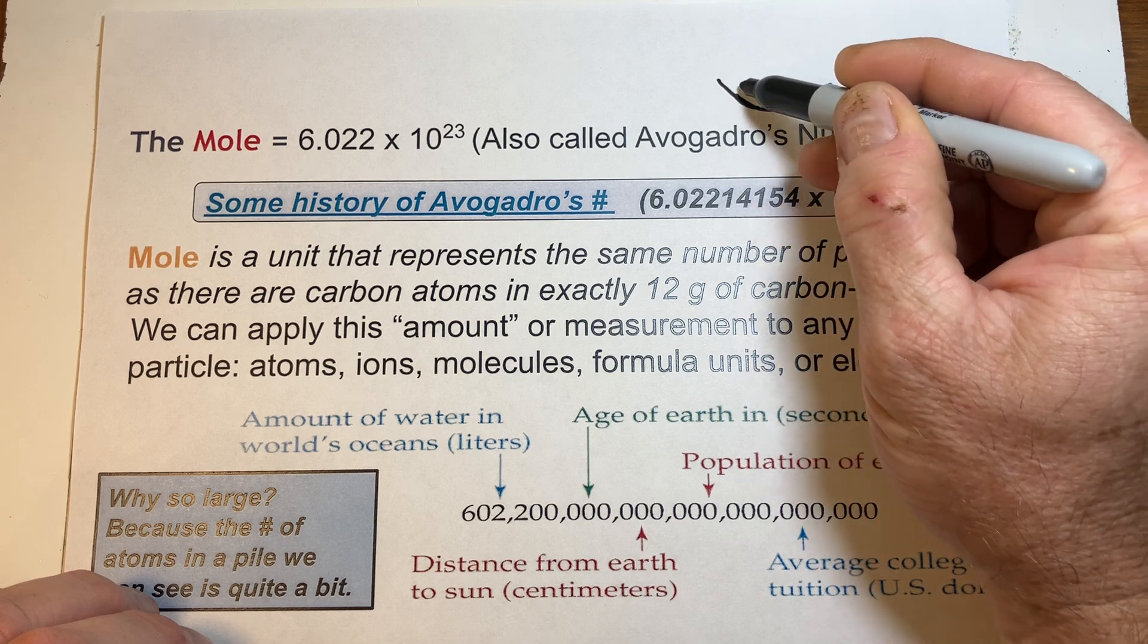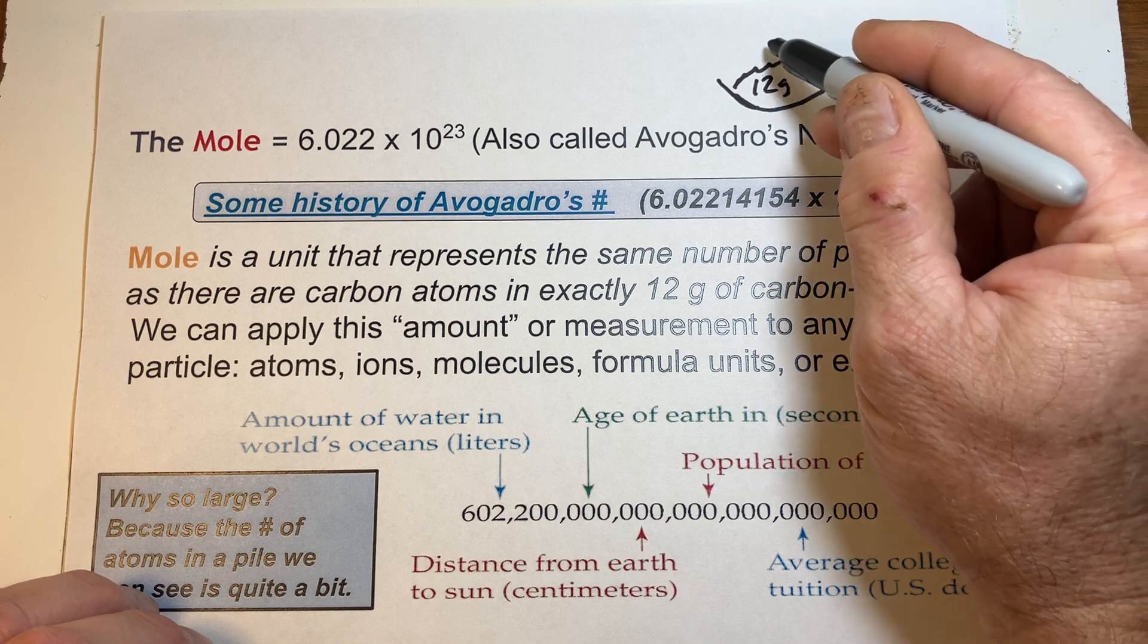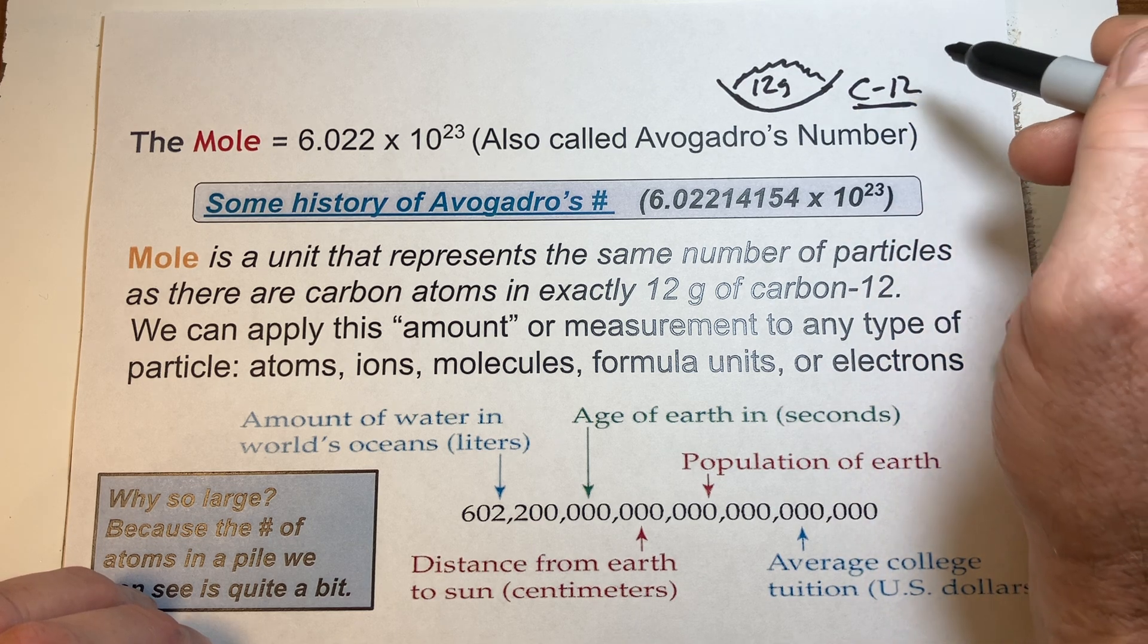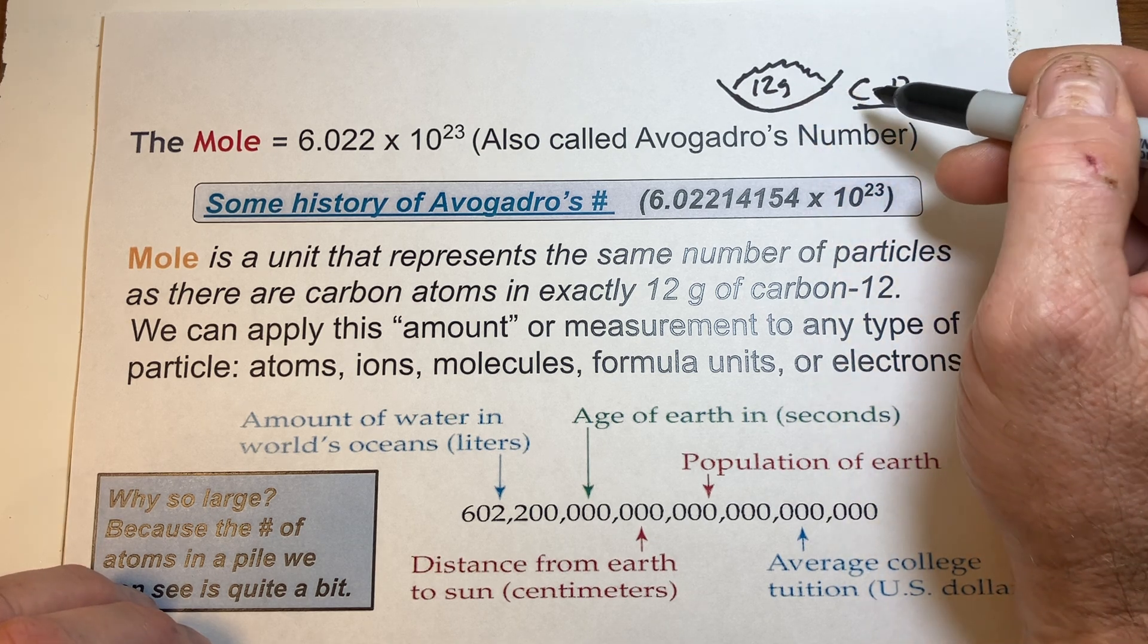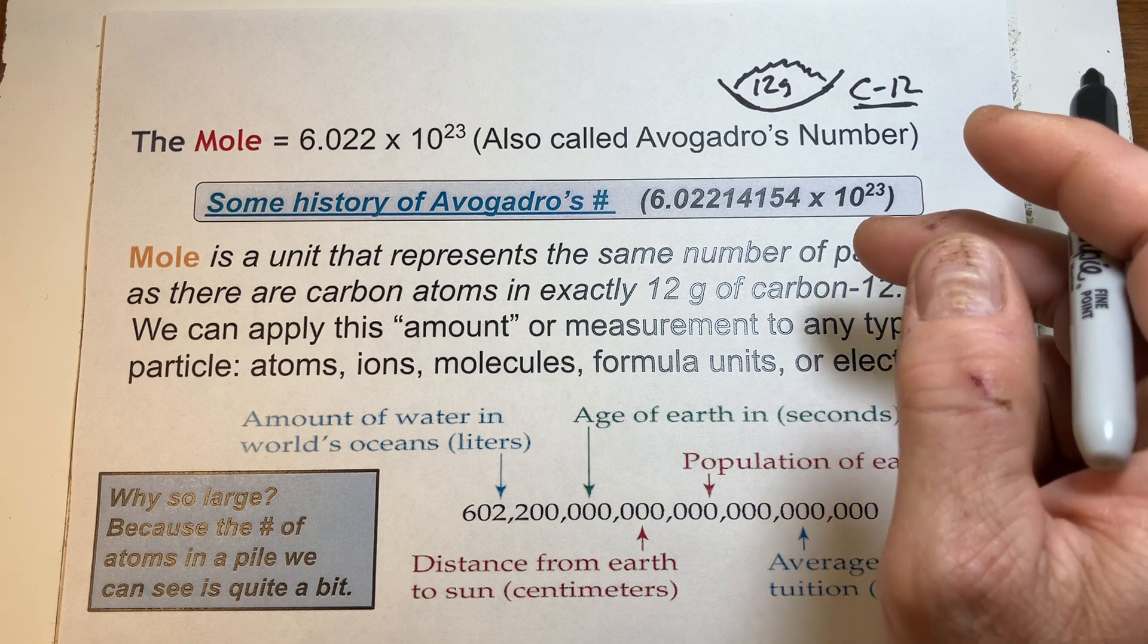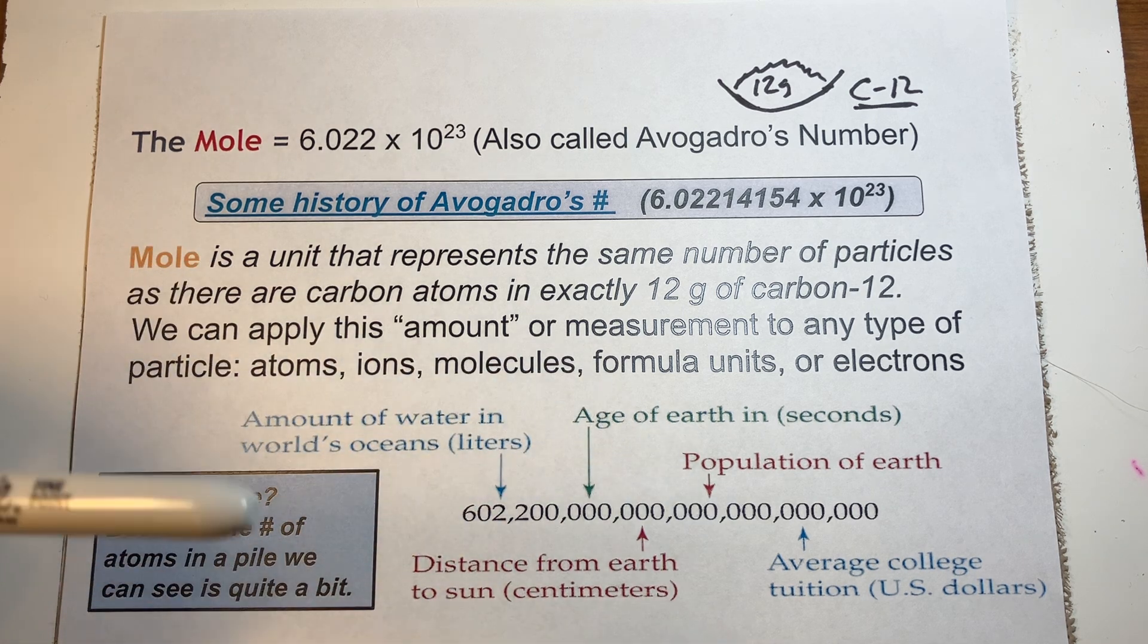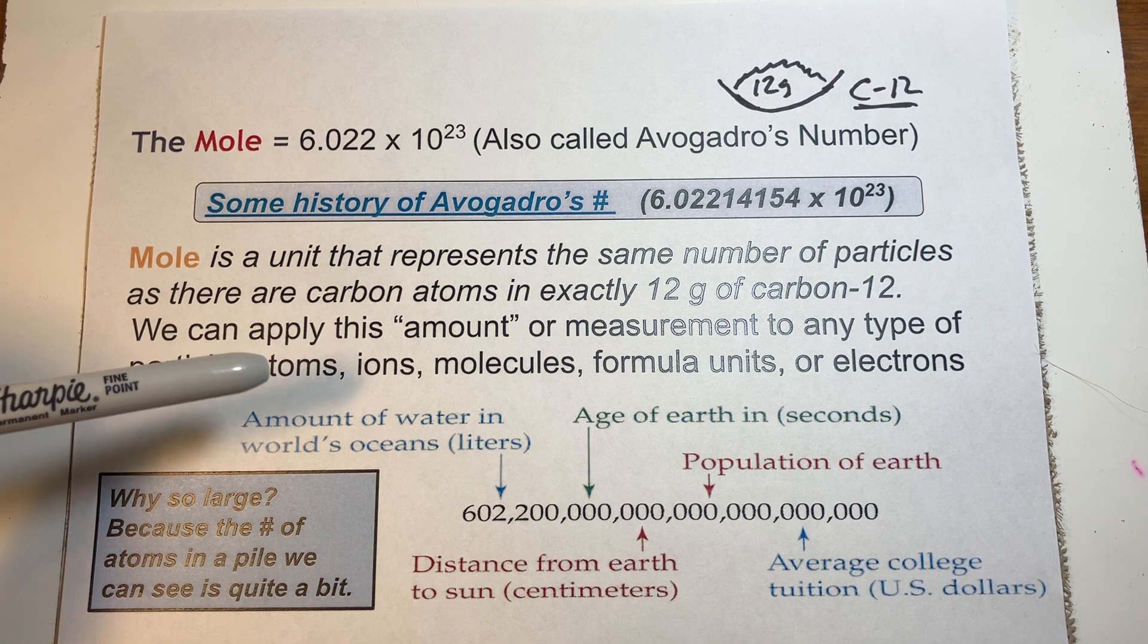So, maybe you can think of it maybe as, if I were to take and weigh out on a balance, twelve grams of just pure carbon twelve. That's a certain isotope, and you now know what this term means. It means it has six protons and six neutrons. All of those atoms in here that make up the twelve grams that are carbon, are carbon twelve. If that's the case, then that number is Avogadro's number. It's sort of what defines it. We can apply this amount or measurement to any type of particle, though.